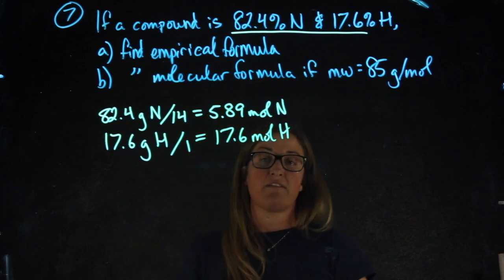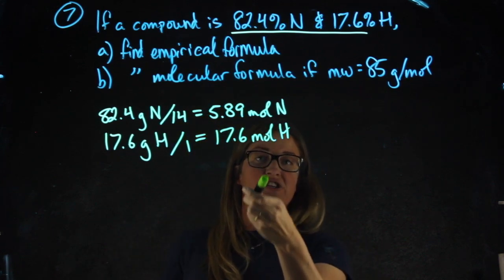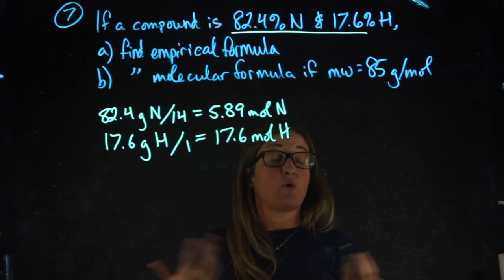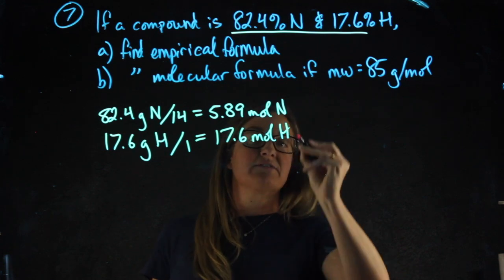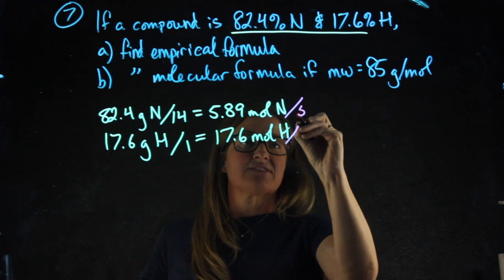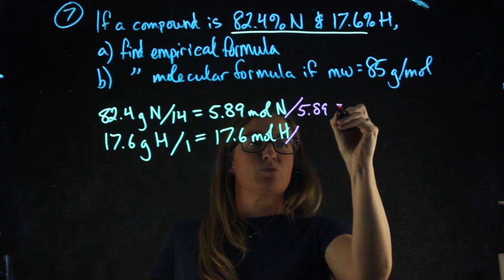I now know in my formula there's going to be more hydrogen than there is nitrogen. Question is, how many times more? Our next step is the step we call divide by smallest, where I take the smallest number of moles and I divide each one of them by that.